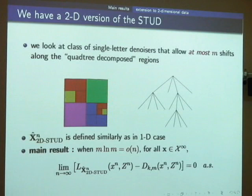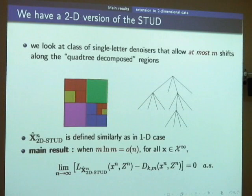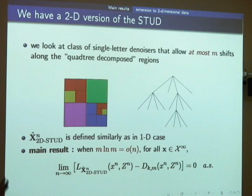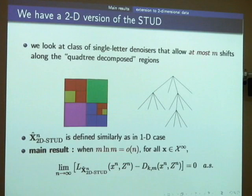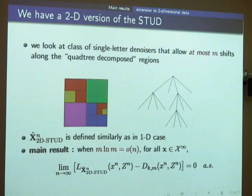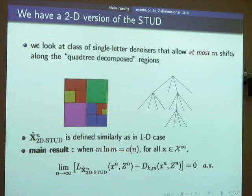Regarding convergence rate: for the almost-sure convergence result (probability-1), the rate is hard to characterize — we used the Borel-Cantelli lemma, which shows convergence but doesn't give an explicit rate. For the expectation result, the convergence rate was approximately 1/√n. In practice, for sequences of length 10⁶, the algorithm gets quite close to optimal performance.